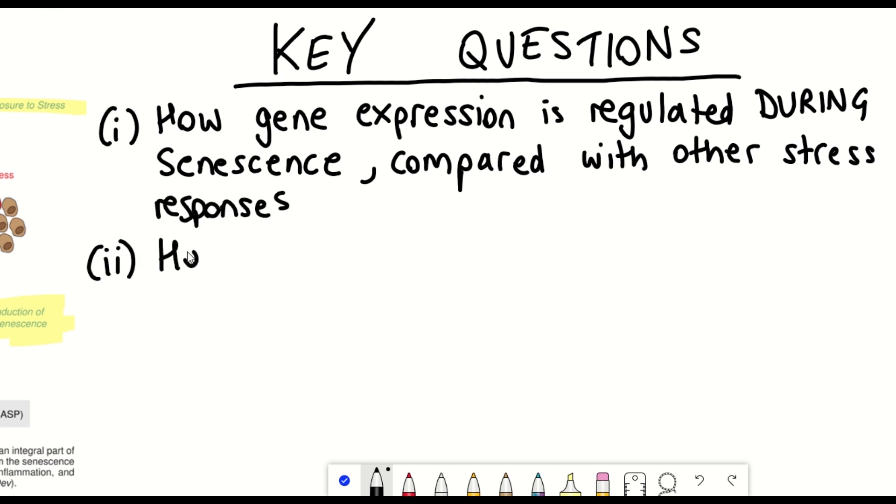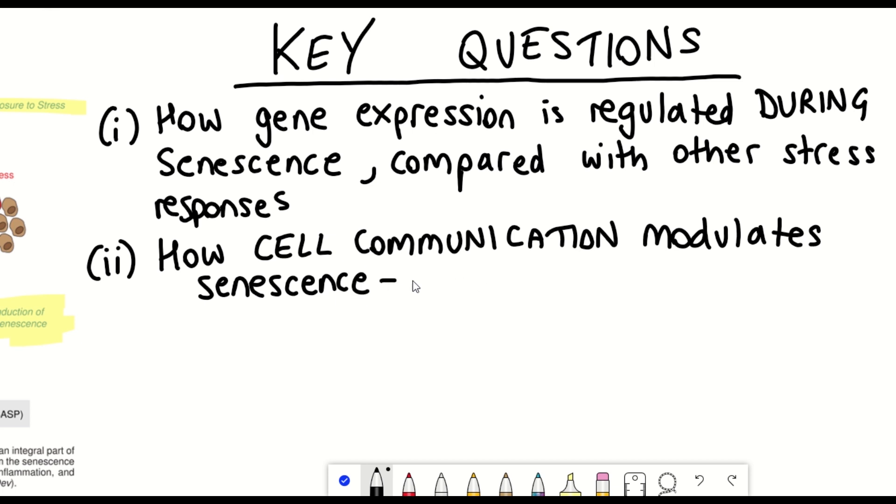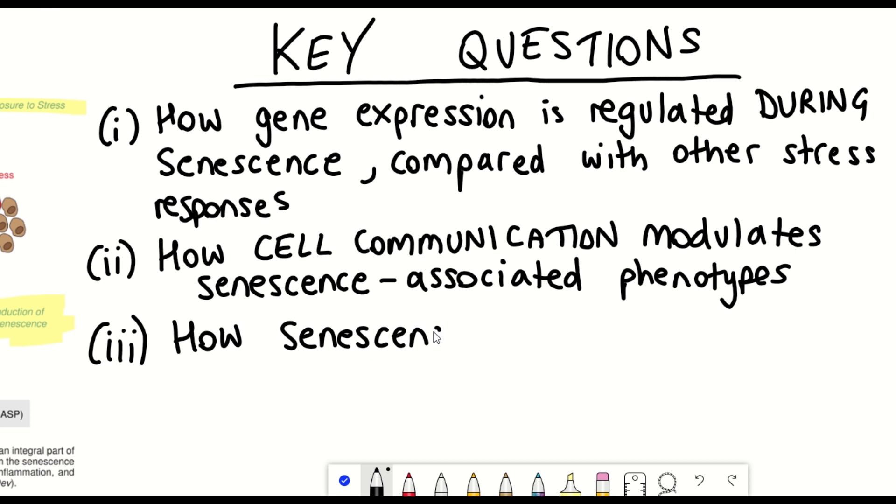We are also interested in how cell communication modulates senescence-associated phenotypes, and in particular, this focuses on the secretory phenotype, whereby the signaling molecules result in the communication between senescent cells and normal cells and immune cells, and how this implicates senescent cell clearance.